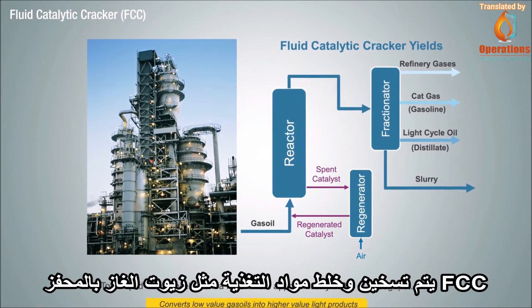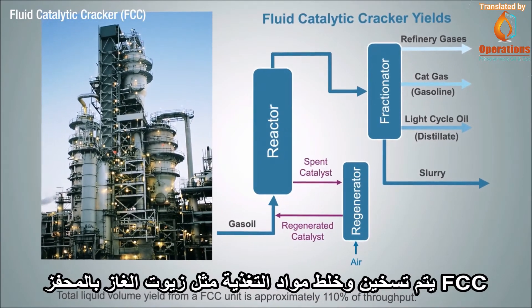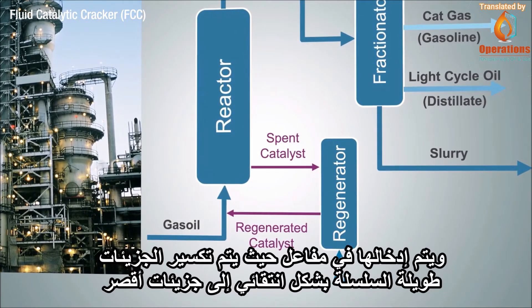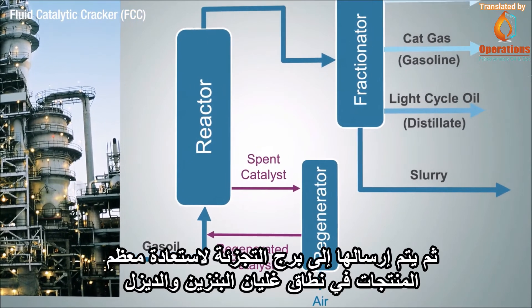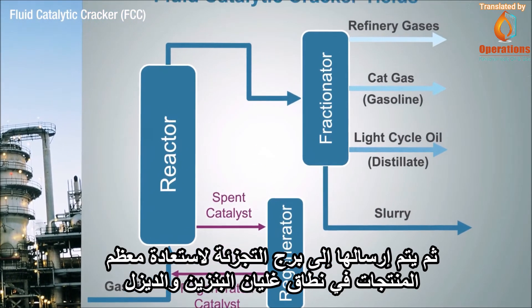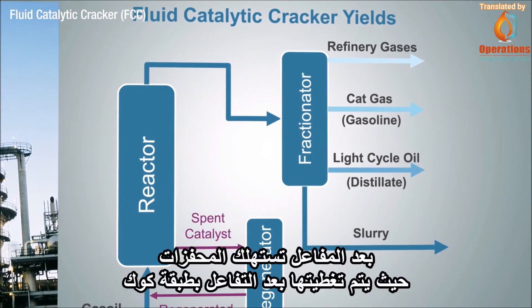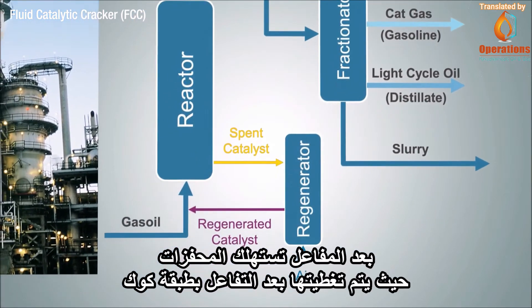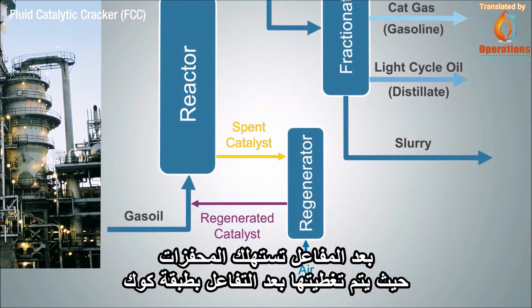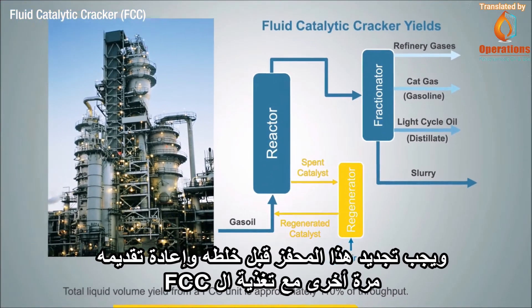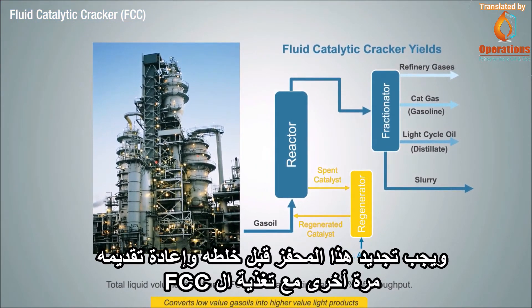In an FCC unit, feeds such as gas oils are heated and mixed with catalyst and introduced into a reactor where long chain molecules are selectively cracked into shorter molecules, then sent to a fractionator with most products recovered in the gasoline and diesel boiling ranges. Off the reactor you have spent catalyst that, after the reaction, is coated in a petroleum coke layer, and that catalyst has to be regenerated before being mixed and reintroduced with the FCC feed again.